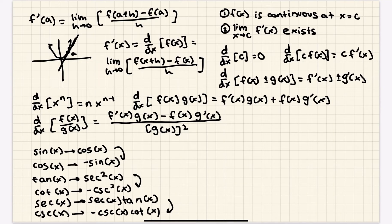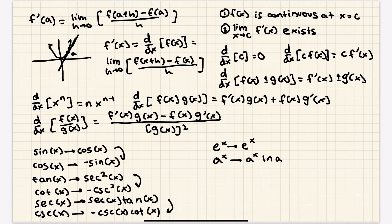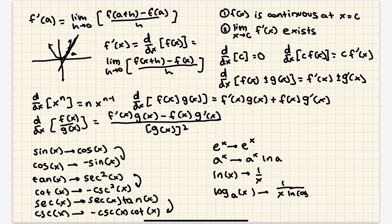For exponential and logarithmic functions: e^x has derivative e^x — e is special because its derivative is itself. For a general base, d/dx of a^x equals a^x · ln(a). If you plug in e, you get e^x · ln(e) = e^x · 1 = e^x. For natural logarithm: d/dx of ln(x) = 1/x. For log base a of x: the derivative is 1/(x · ln(a)).